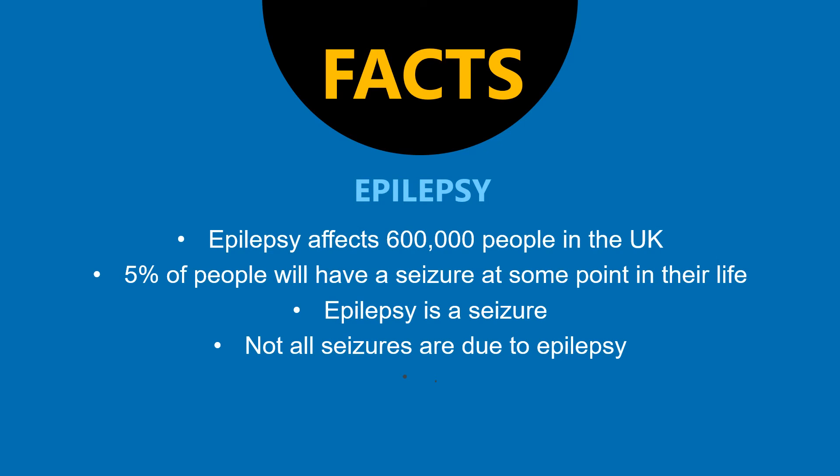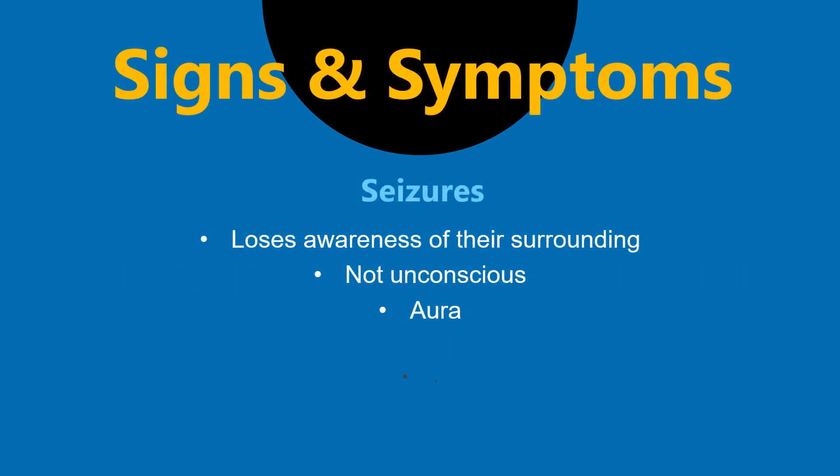Epilepsy affects approximately 600,000 people in the UK. 5% of people will have a seizure at some point in their life. Not all seizures are due to epilepsy, but epilepsy is characterised by seizures. Epilepsy is diagnosed when a patient has experienced at least one seizure with no other identifiable cause. During a seizure, the patient usually loses awareness of their surroundings, and sometimes they experience what is called an aura a few seconds prior to the seizure.